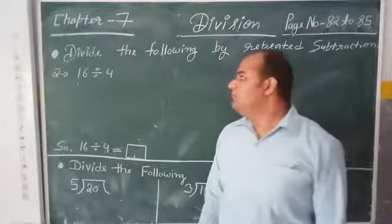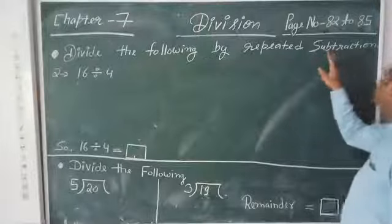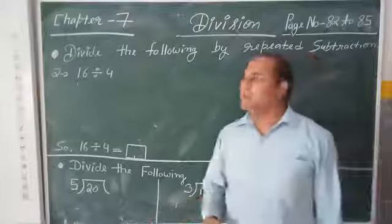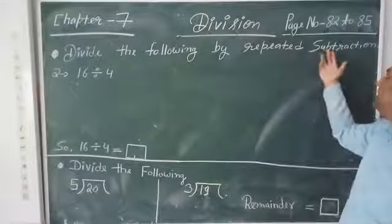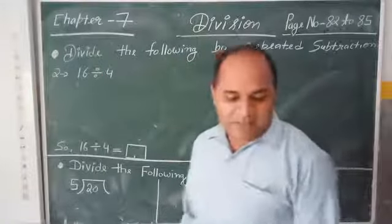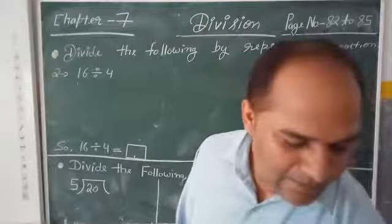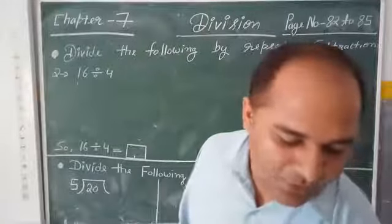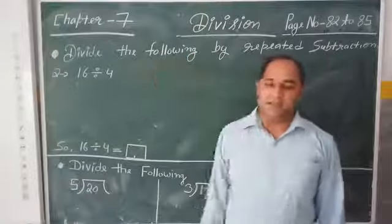The first question is: divide the following by repeated subtraction. This question is given at page number 82.